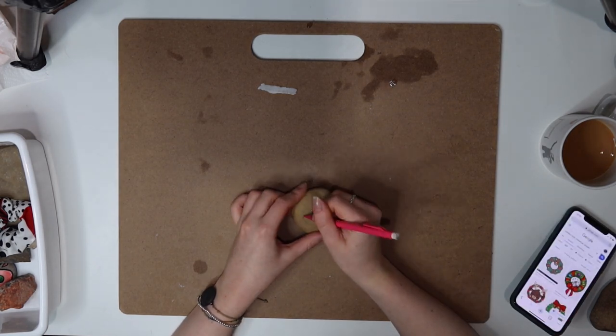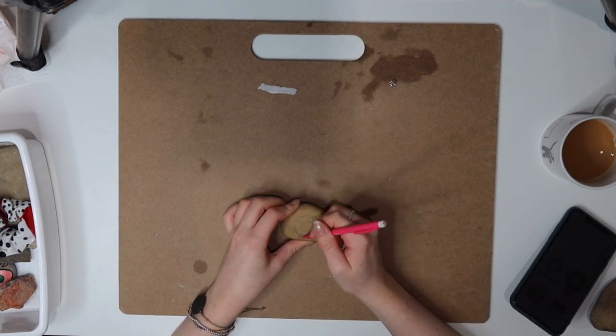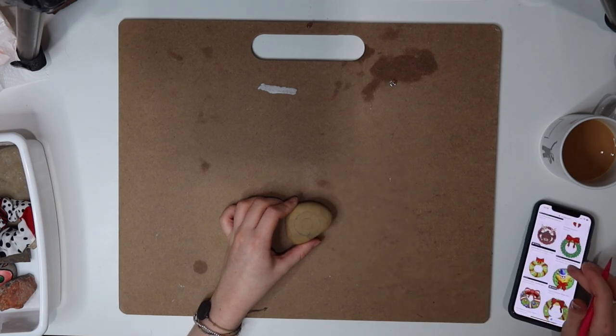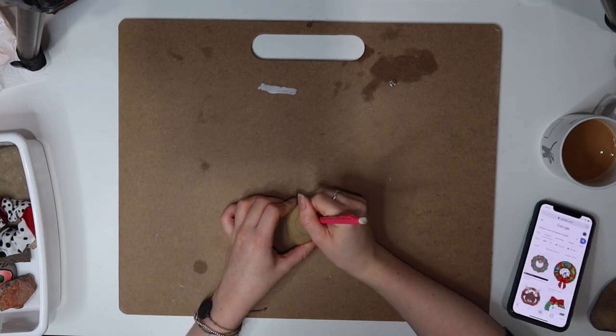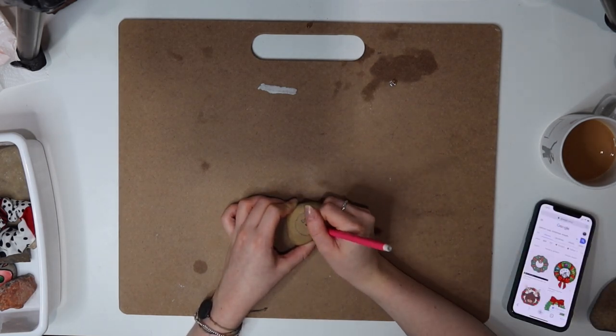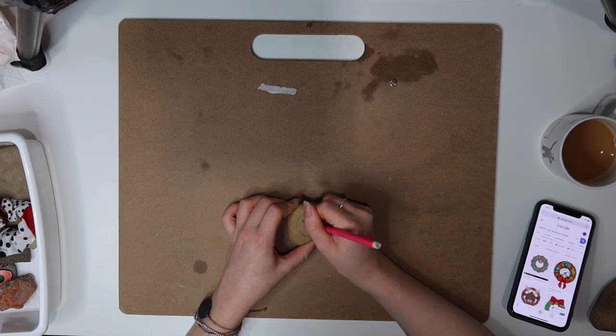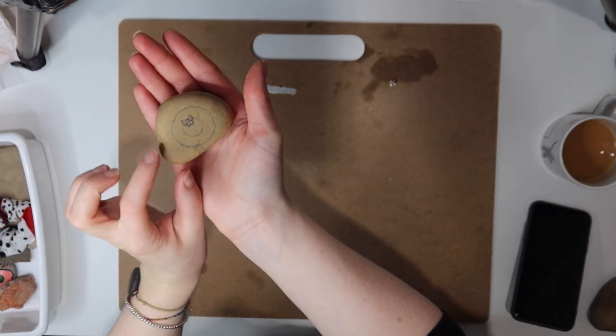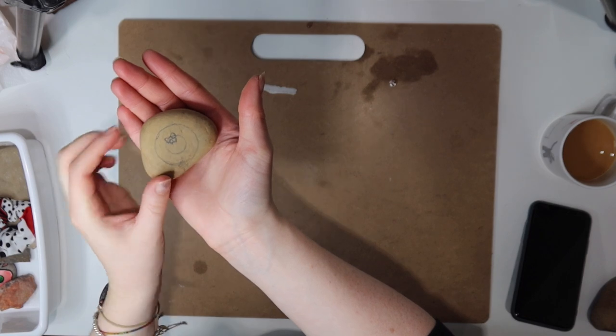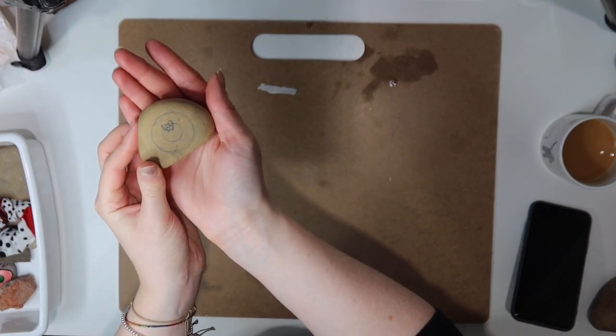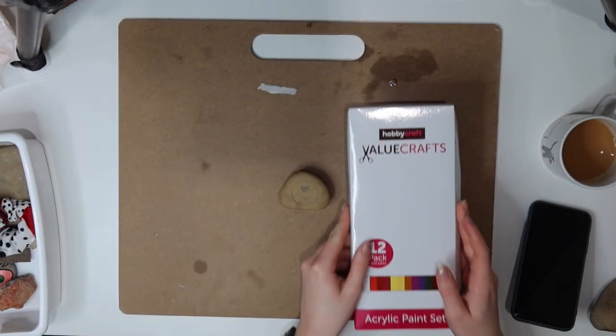So I start by reaching for a pencil and starting to mark out my design. As you can see, I'm using references on Google Images. This is going to be a wreath like a Christmas wreath and I decided to add some bells and berries which you will see me painting a little later. But to begin with, you can see I'm just drawing two circles, one smaller than the other, and then I've added a little bow in the middle and little bells underneath the bow.